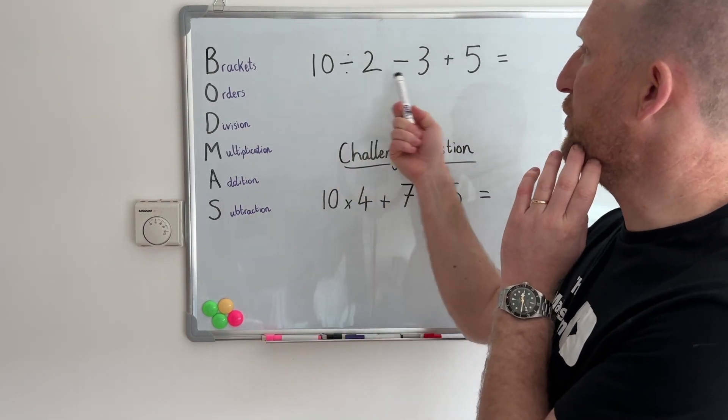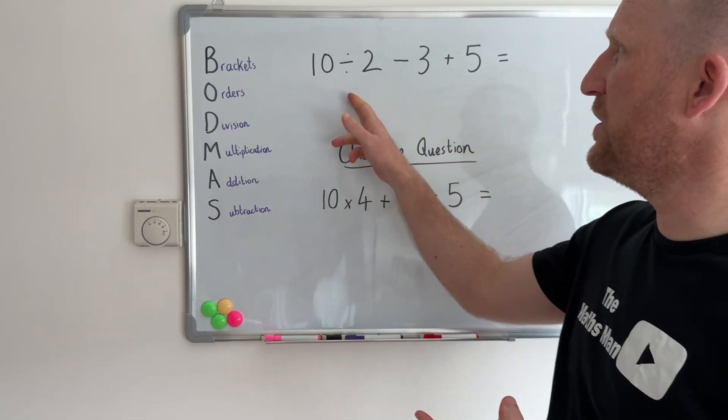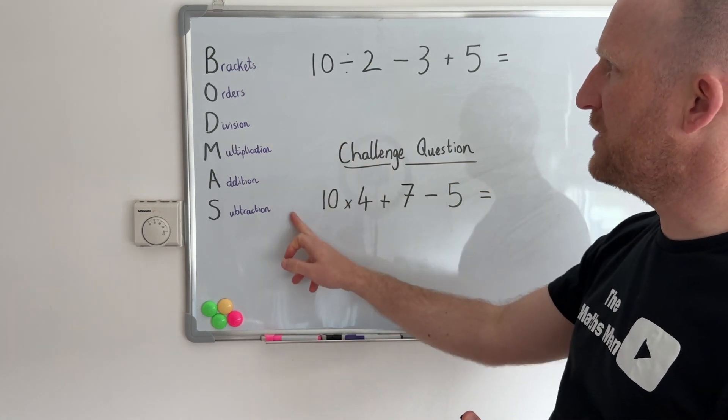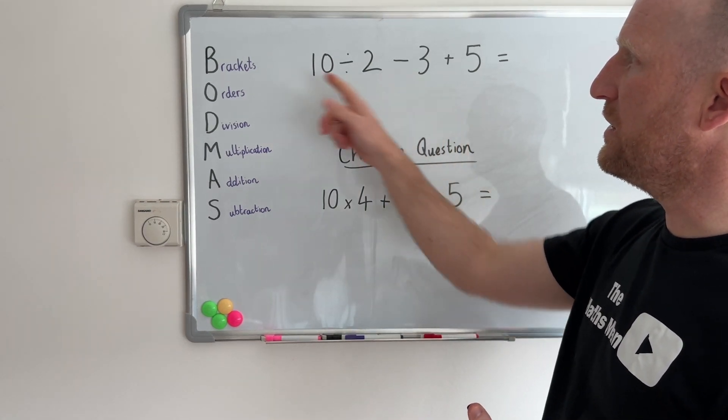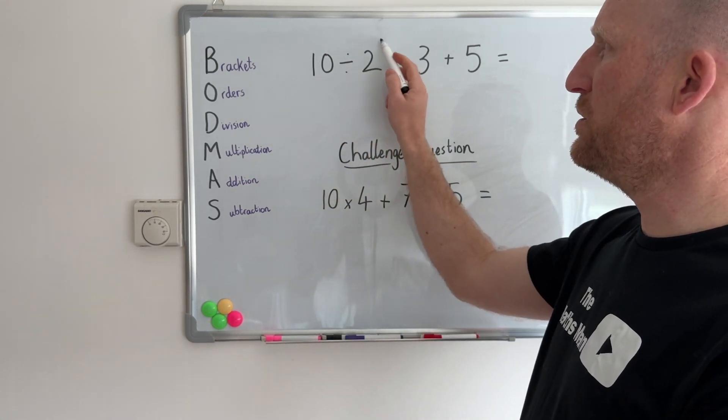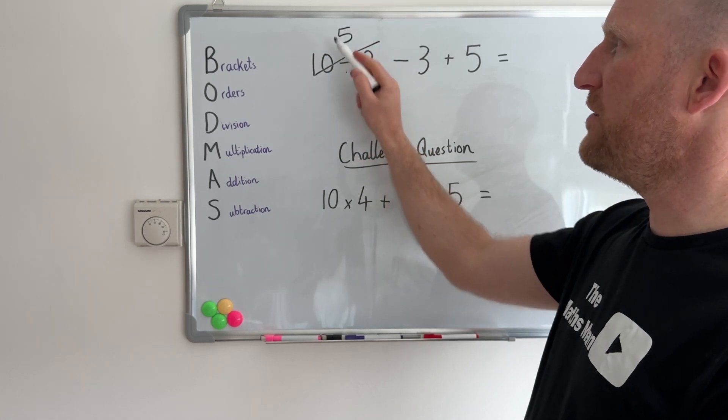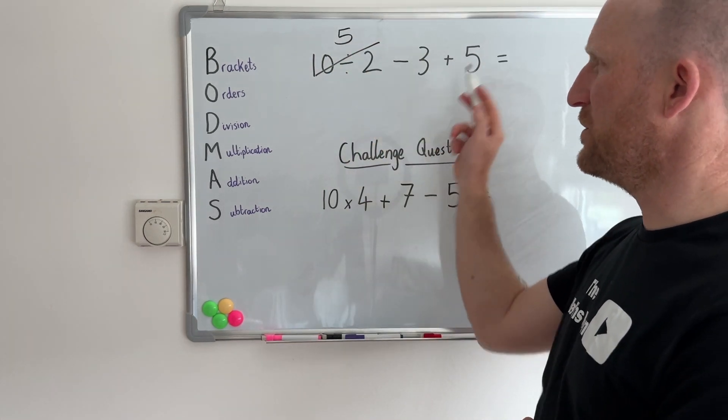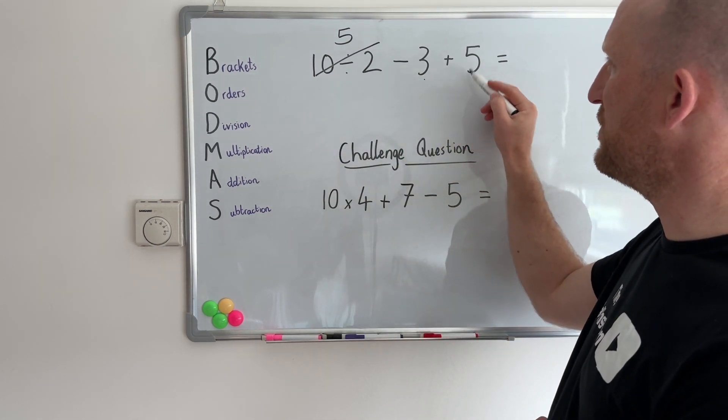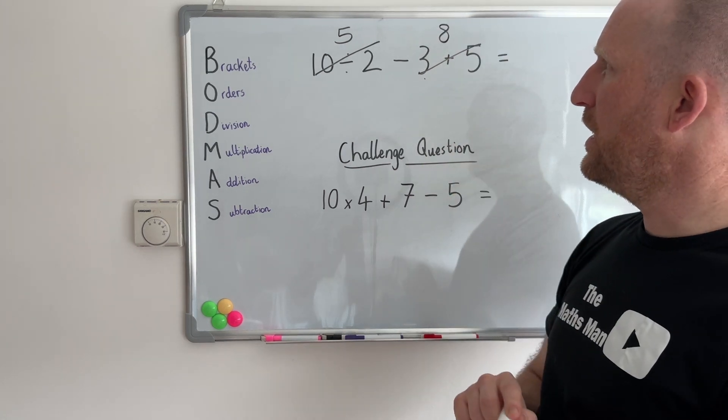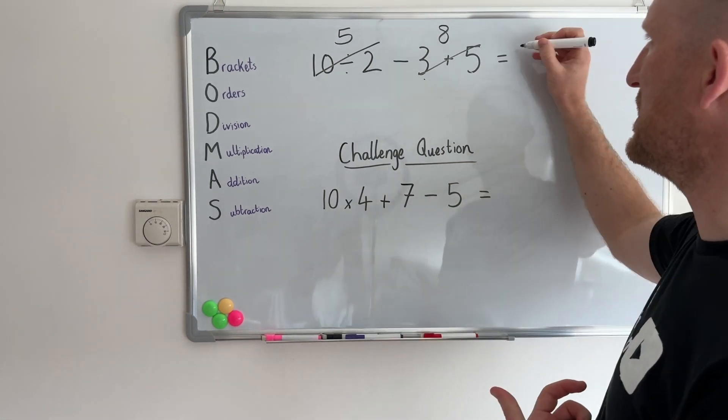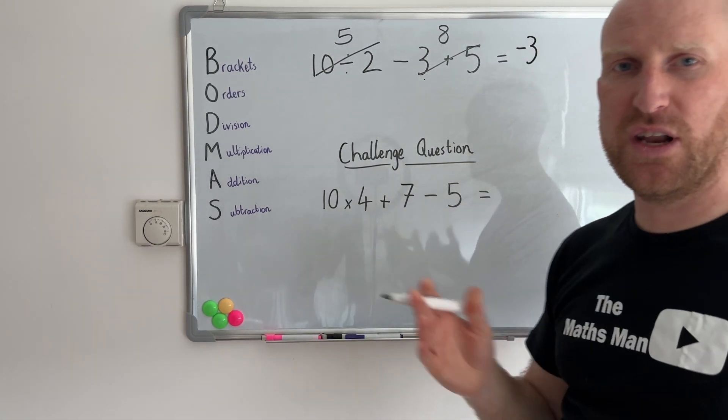So here we have three operations in this question: division, takeaway, and addition. So BODMAS tells me to do the division part of this question first. So 10 divided by 2 is 5. Then I'm left with 5 take away 3 plus 5. Then I need to do the addition part of this. So 3 plus 5 gives me 8. And then I'm left with 5 take away 8 which would actually give me a negative number which is minus 3 or negative 3.